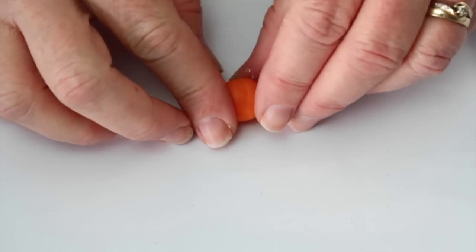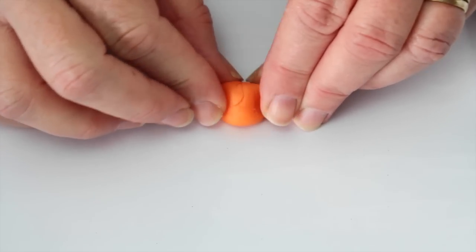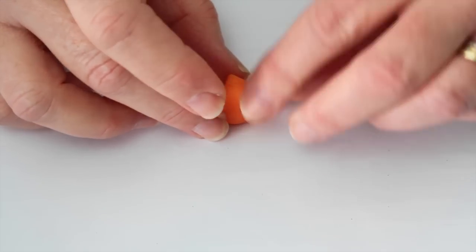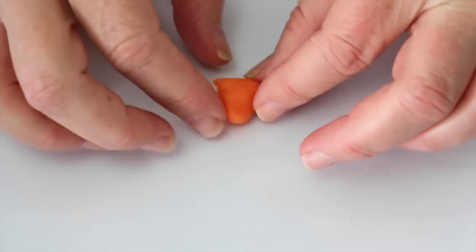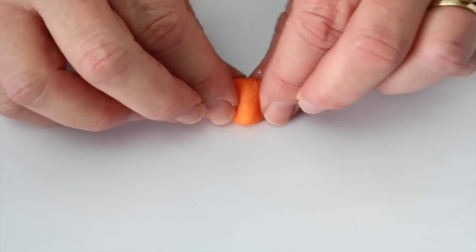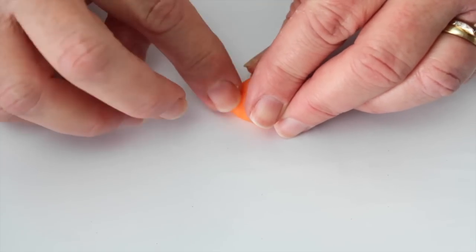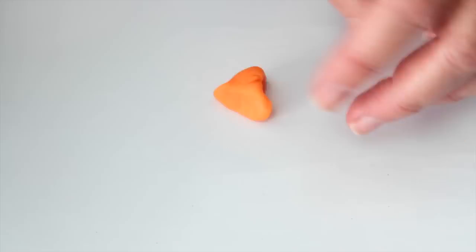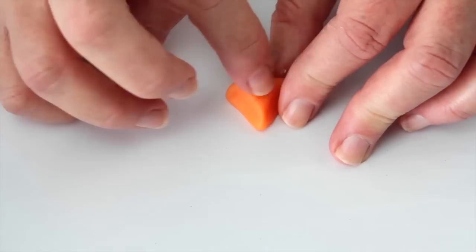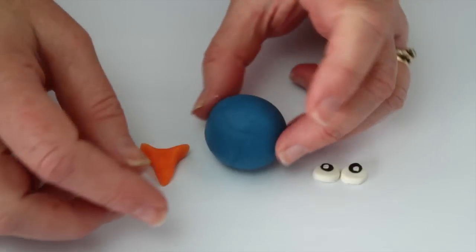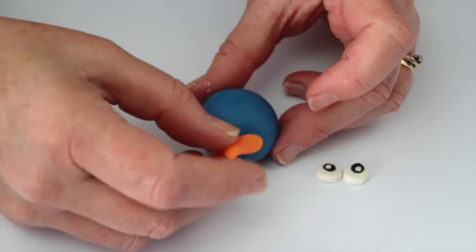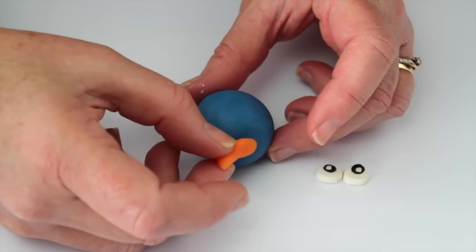Roll the orange play-doh into a smooth ball. Flatten one side and mold the other side into a beak. Push the beak and eyes onto the blue ball of play-doh to make the peacock's head.